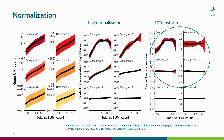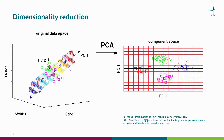SC-transform also detects highly variable genes and returns the normalized gene expression values for these genes. So after SC-transform, only the detected highly variable genes are returned, as we are only interested in the genes with the most information. This reduces the dimensionality from the number of original genes to the number of the returned variable genes.